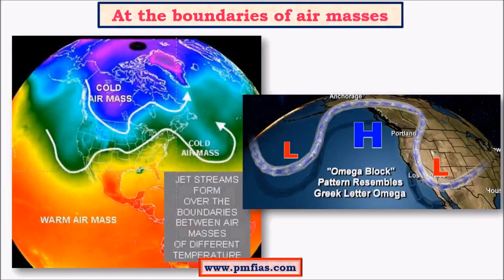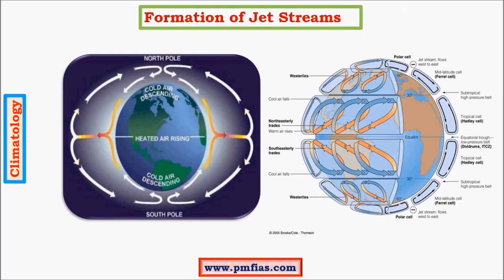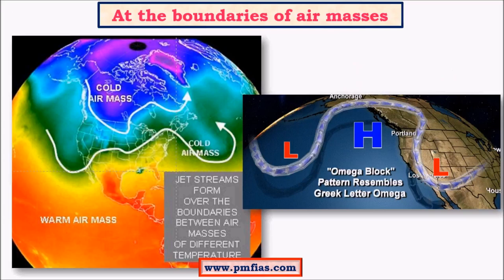Looking at this figure we can see how different air masses are separated due to different physical properties. We have warmer air masses at the equator, followed by comparatively colder air masses in the temperate regions, and much colder air masses in the polar regions. The tropical regions have a warm atmosphere associated with the Hadley cell, the temperate regions are comparatively cooler associated with the Ferrell cell, and the polar regions are very cold associated with the Polar cell. Approximately, the Hadley cell lies between the equator and the temperate regions, followed by the Ferrell cell and then the Polar cell.